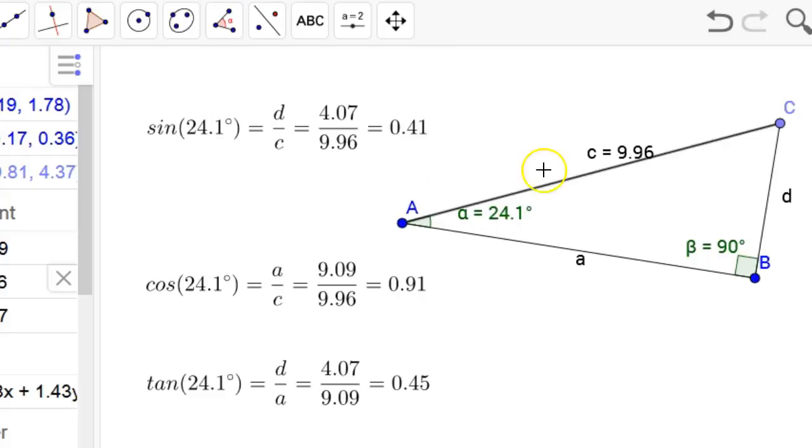And so there's that 9.6. D similarly would be 4.07. A would be 9.09. And you can see cosine is a over c, which is adjacent over hypotenuse. Tangents opposite over adjacent, which 4.07 over 9.09. And take a look at these, and these third numbers are just when you divide them.